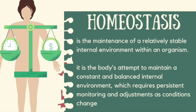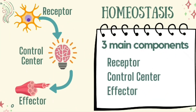Let us first define what homeostasis is. Homeostasis is the maintenance of a relatively stable internal environment within an organism. It is the body's attempt to maintain a constant and balanced internal environment, which requires persistent monitoring and adjustment as conditions change. There are three main components of homeostasis: the receptor, the control center, and the effector.